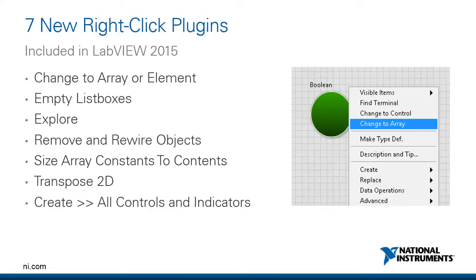With LabVIEW 2015, we have seven new right-click plugins that ship with the product — you'll discover these as you're using the editor. For example, if you have a Boolean on your front panel and right-click on it, you'll see a new 'Change to Array' option below Change to Control. Clicking that turns it into an array. The seven new plugins let you: empty a list box, explore and find the location of a sub-VI on disk, remove and rewire selected objects, size an array to its contents, and transpose a 2D array.